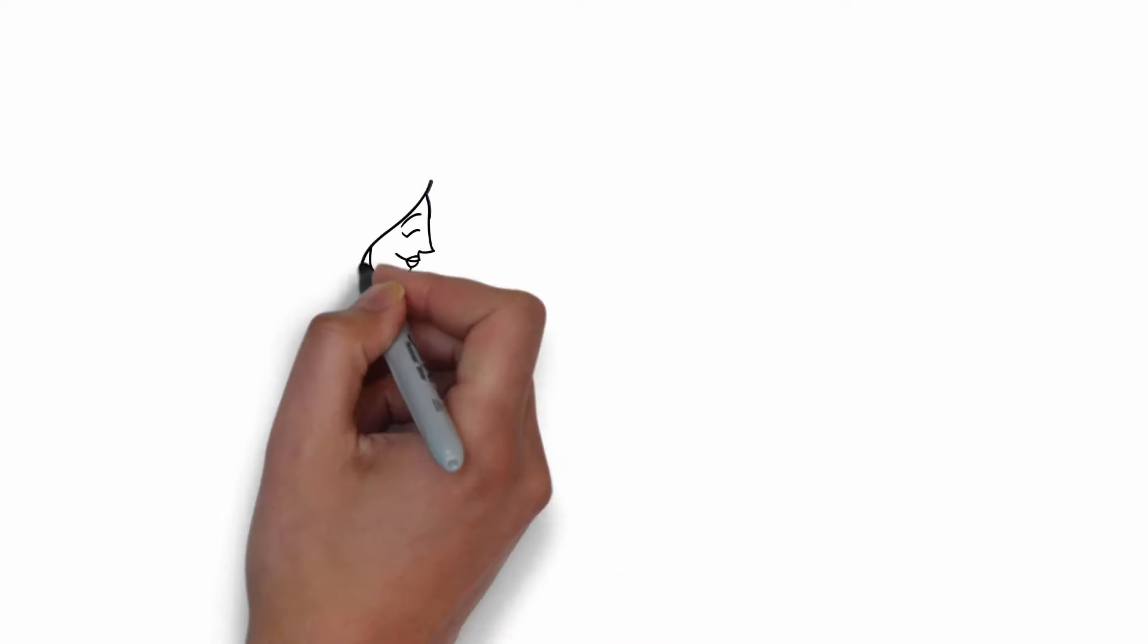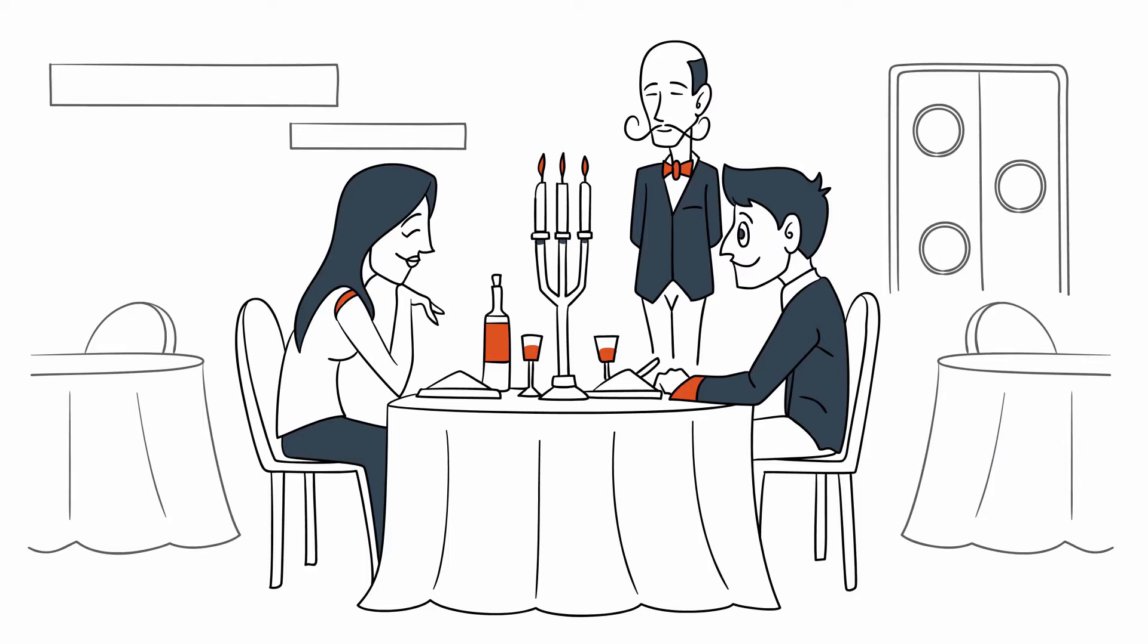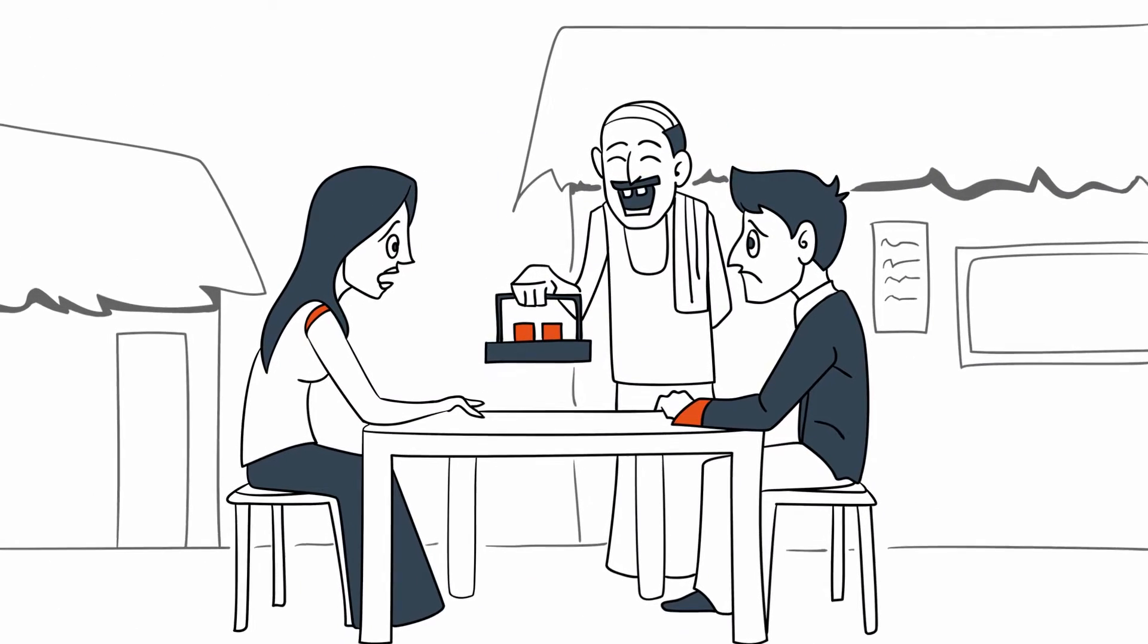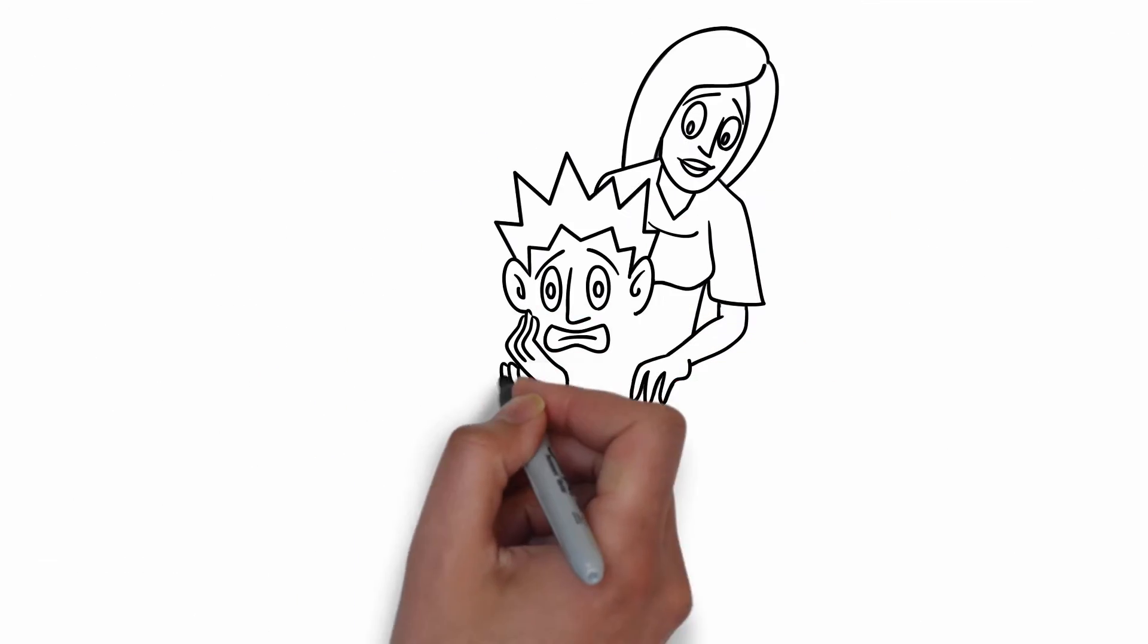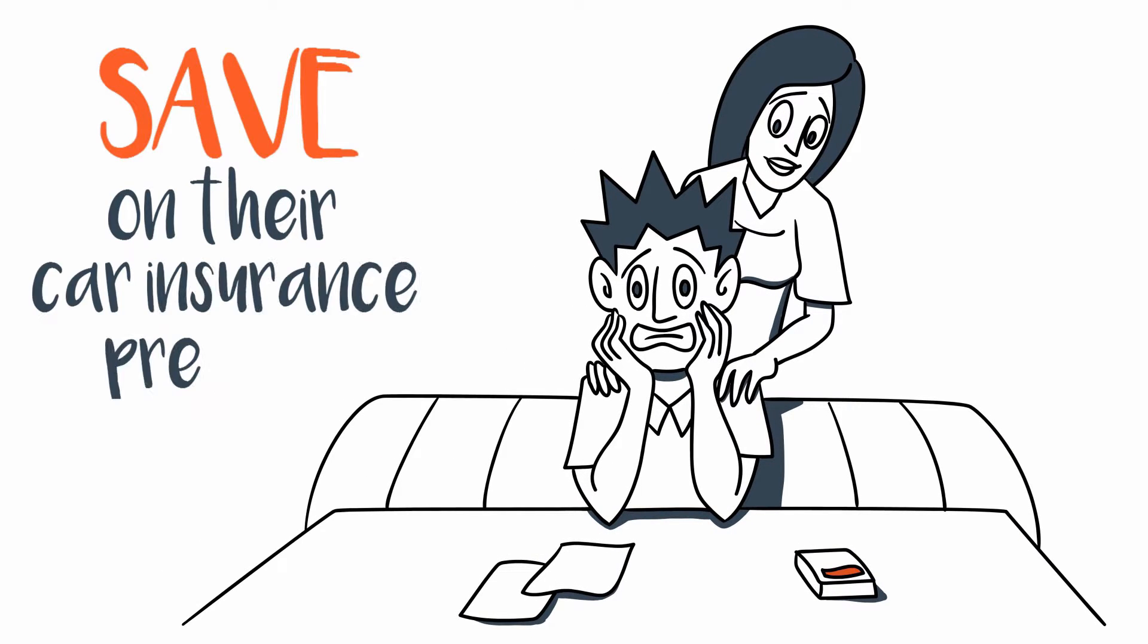Rohit had been planning to take Shania out on a special dinner on Valentine's Day, but this extra expense would have made him cut corners. But Shania is a financial expert, so she tells Rohit how they can save on their car insurance premium.